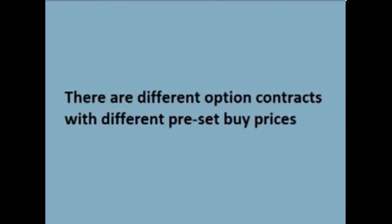When buying an option, there are many choices for the preset buy price. For instance, if the stock is $10 a share, one can buy a contract locking in a buy price of $10, or they could buy a contract that locks in some other price: $9, $8, $11, $12. Of course, the different contracts cost different amounts.